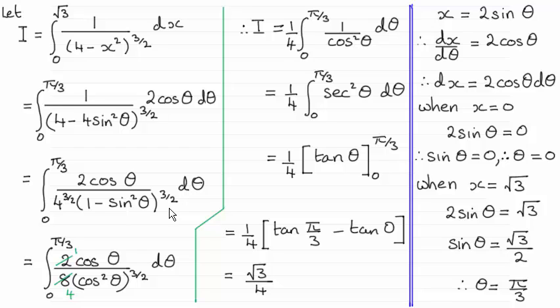And then if I take the square root of 4 which is 2, cube it I get 8. And 1 minus sine squared theta is the same as cos squared theta. And then you can see I've cancelled through by 2 to give me a quarter here.